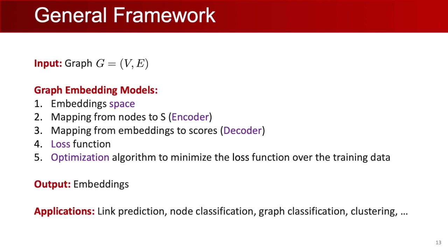The output of this process is graph embeddings — vertex embeddings in the chosen representation space — which can be used as features for nodes in many machine learning tasks including link prediction, node classification, and graph classification.